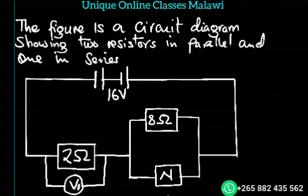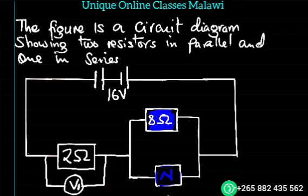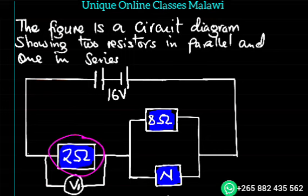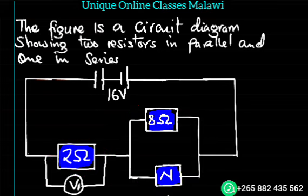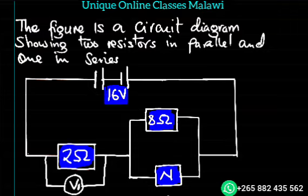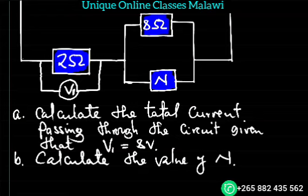The figure is a security diagram showing two resistors. We have 8 ohms in parallel. The resistors are 4 ohms — one resistor and two resistors that are in parallel. We have to calculate the total current passing through the circuit, so this is V1.